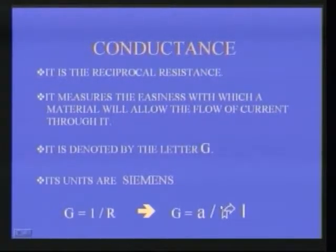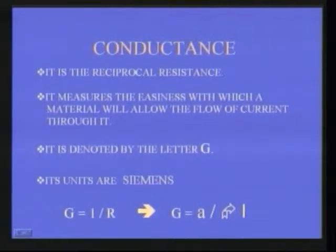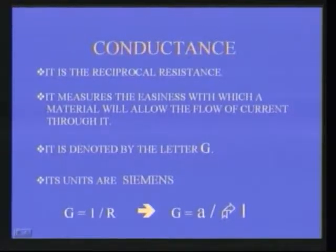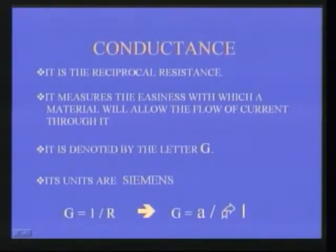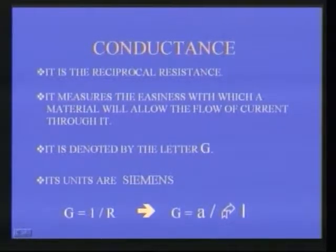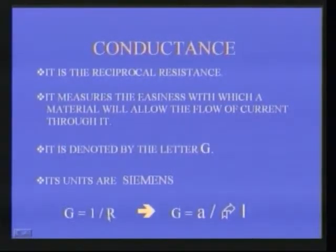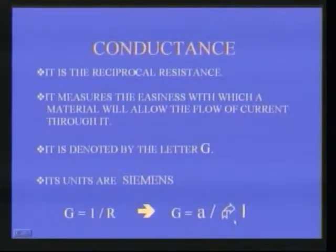Now let us see the definition of conductance. Conductance is the reciprocal of resistance — it measures the easiness with which a material allows the flow of current. It is denoted by G and the unit is Siemens. From the definition, G = 1/R = A/(ρL) = σA/L, where σ (sigma) is called specific conductance.